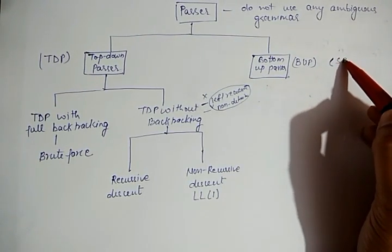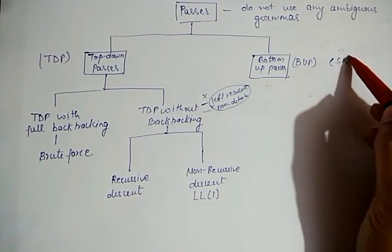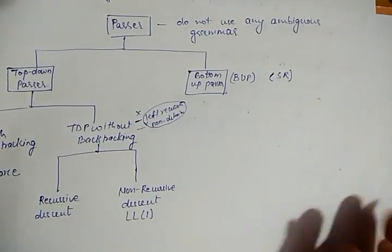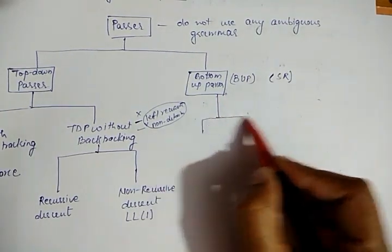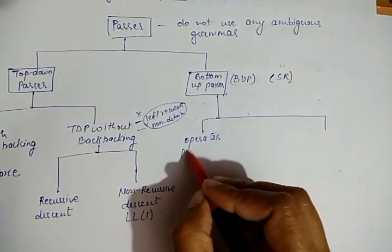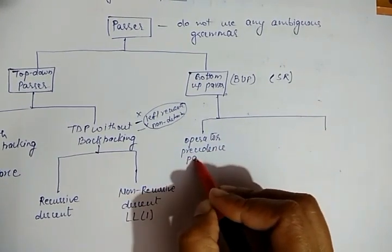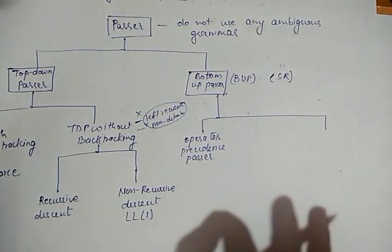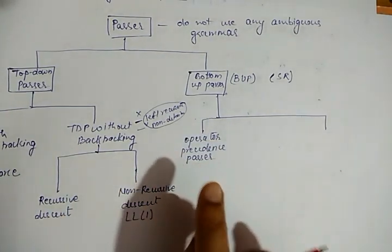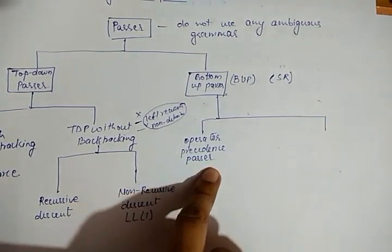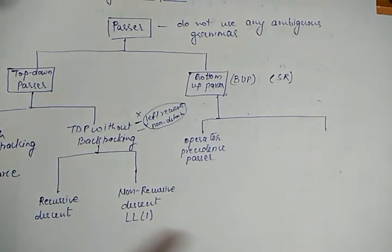For the Bottom-Up Parser, we study a technique called the SR parser, or Shift-Reduce parser. This can be divided into two categories. The first is the Operator Precedence Parser — this is the only parsing technique that can use ambiguous grammar. No other parsing technique allows the use of ambiguous grammar.